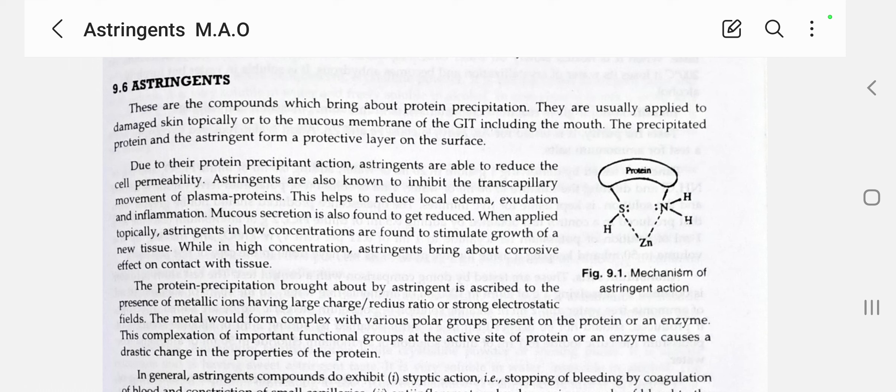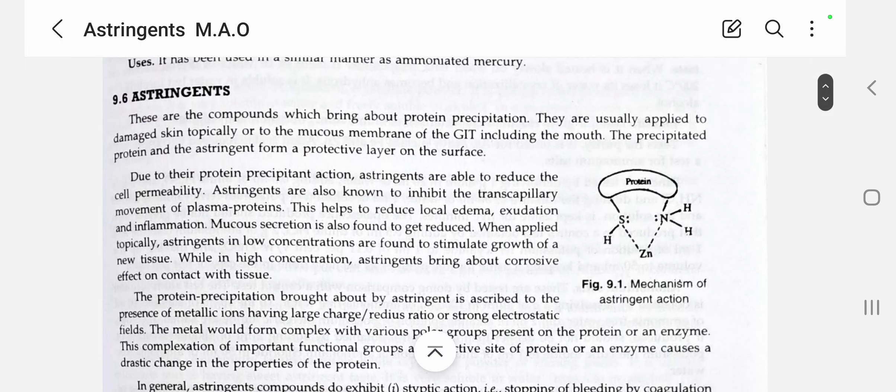The precipitated protein and the astringent form a protective layer on the surface. When applied topically or given orally by mouth, it immediately produces protein precipitation. Due to their protein precipitant action, astringents are able to reduce cell permeability by producing protein precipitates, which reduces cell permeability.